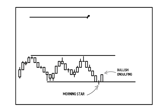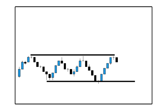On the other side of the trend we can find the opposite signal, which is called the evening star. The first candlestick in this signal is a long bullish candle. The second candle is a small candle showing indecision. And the third is a long bearish candle that closes below the midpoint of the first candle.